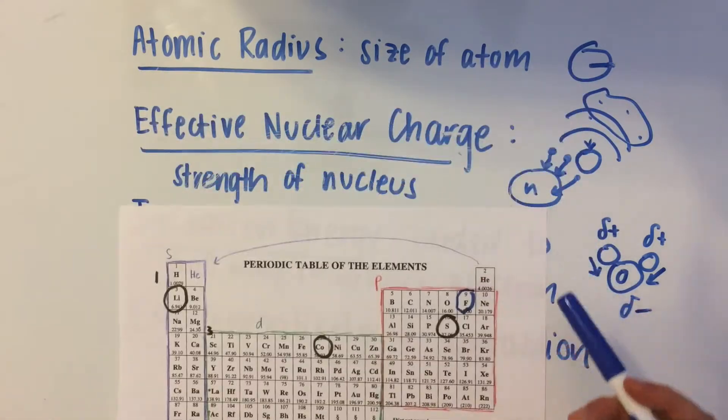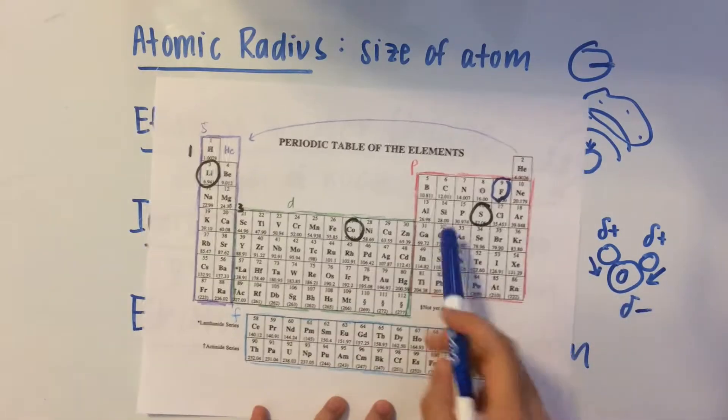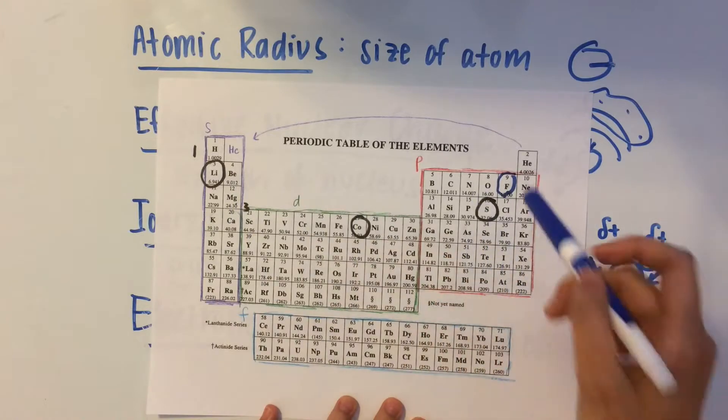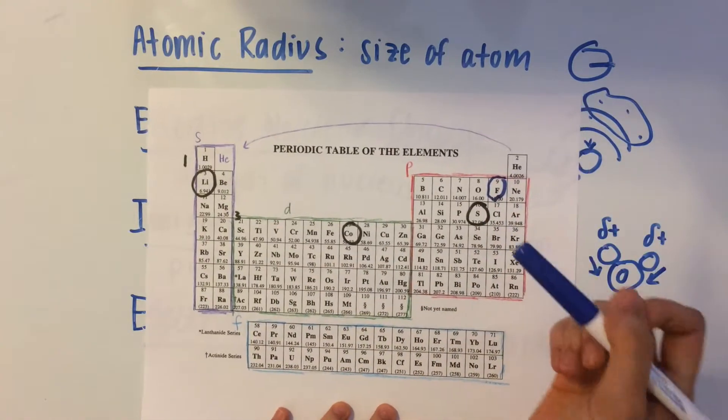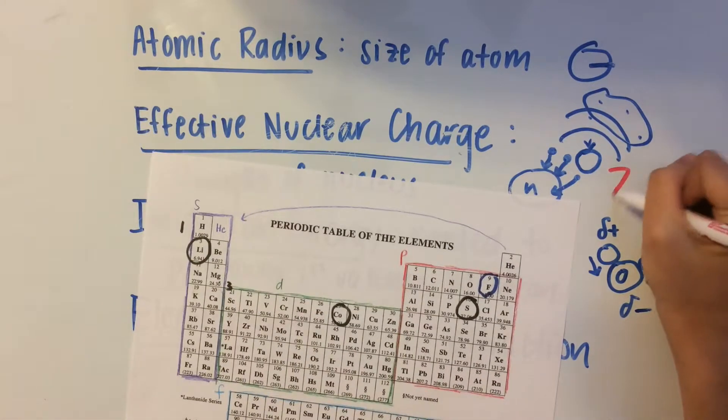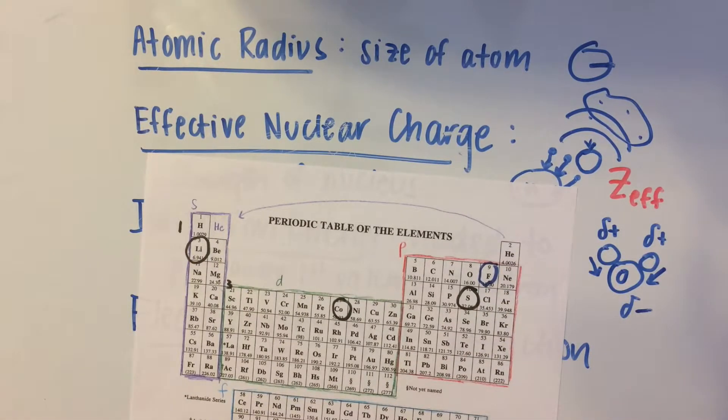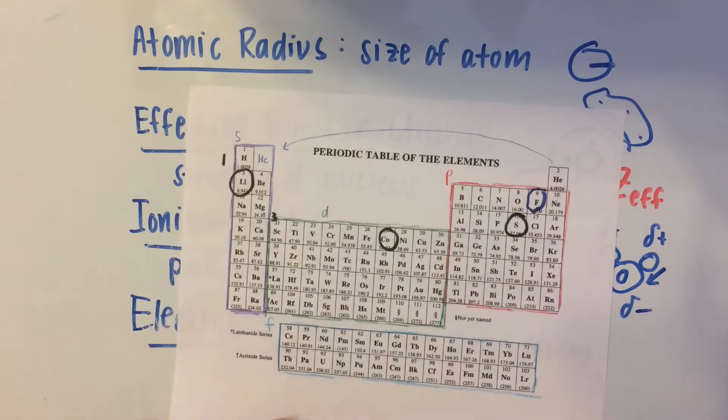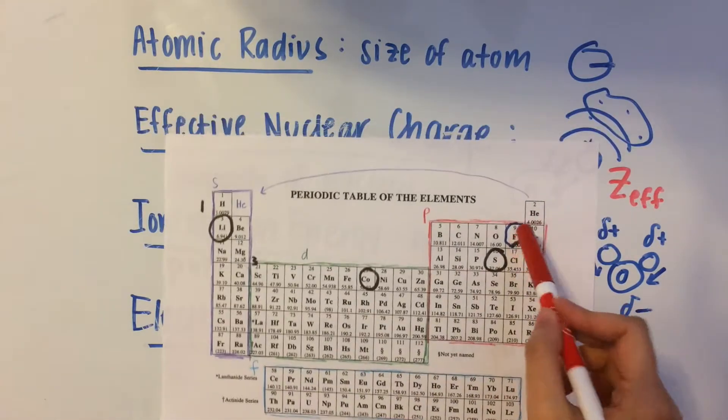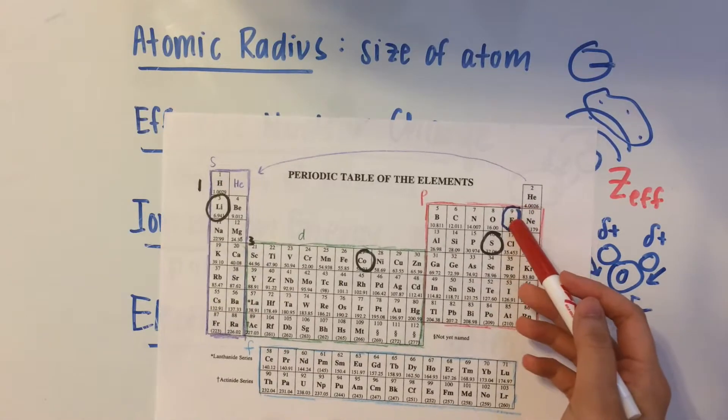And then second one, effective nuclear charge, that increases as you go to the right. So fluorine has a very high effective nuclear charge. And I'd also like to note that nuclear charge is denoted like this, Z, and then EFF as the subscript. So fluorine has a very high effective nuclear charge because it has many protons.